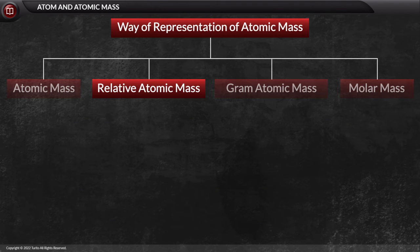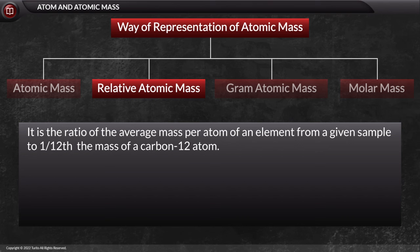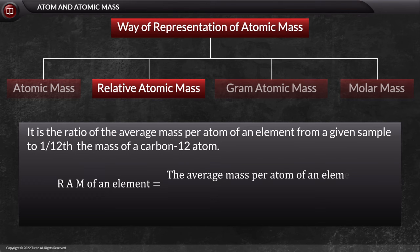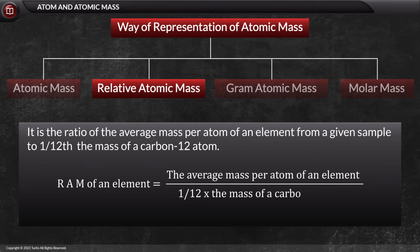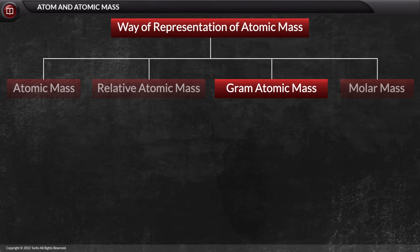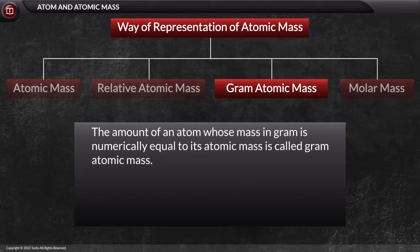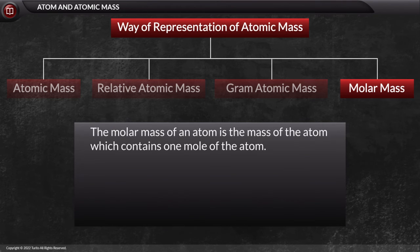Next is relative atomic mass (RAM): the number of times one atom of an element is heavier than 1/12 the mass of a C-12 atom. Since it is a ratio of two atomic masses, it is dimensionless — no unit. After this is gram atomic mass: the amount of an atom whose mass in grams is numerically equal to its atomic mass; its unit is gram. Last is molar mass: the mass of the atom which contains one mole of the atom; its unit is gram per mole.